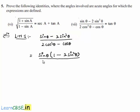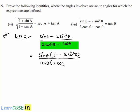In the denominator, let us take cos θ as common, then we get the denominator as cos θ × (2cos²θ - 1).